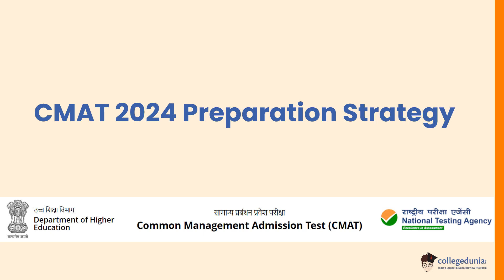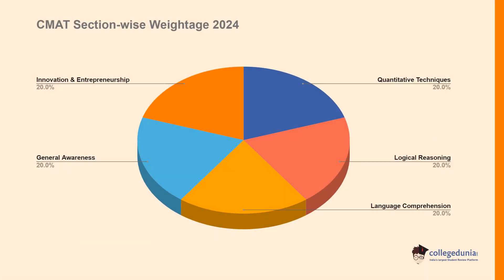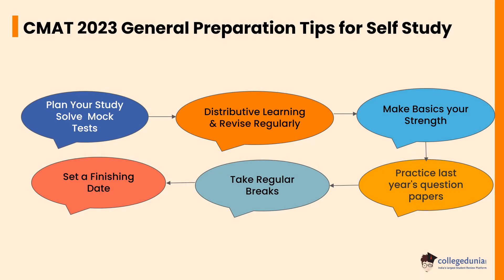Hello everyone, welcome back to College Dunia's YouTube channel. Today we will be discussing CMAT 2024 preparation strategy. Let's check the CMAT section-wise weightage 2024. The sections — Quantitative Techniques, Innovation and Entrepreneurship, General Awareness, Logical Reasoning, and Language Comprehension — each consist of a weightage of 20 percent.